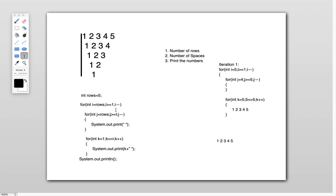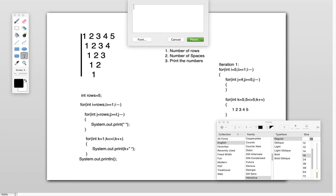Once the inner loops finish executing and conditions become false, it comes out of the inner loops and goes back to the outer loop. Then i minus minus — i value is decremented by 1, so i will be equal to 4 in the second iteration. Since the first iteration has been explained clearly, I'll go through the second iteration faster.